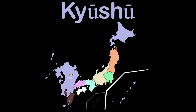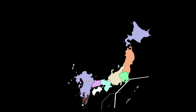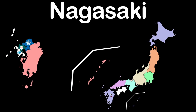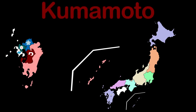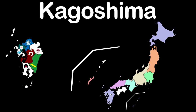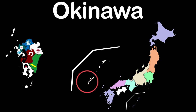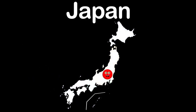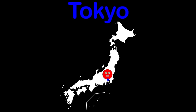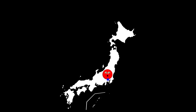I am Kyushu, the final region, with 8 prefectures: Fukuoka, Saga, Nagasaki, Kumamoto, Oita, Miyazaki, Kagoshima, and Okinawa. I am the country of Japan — my capital is Tokyo. Now let's sing along.